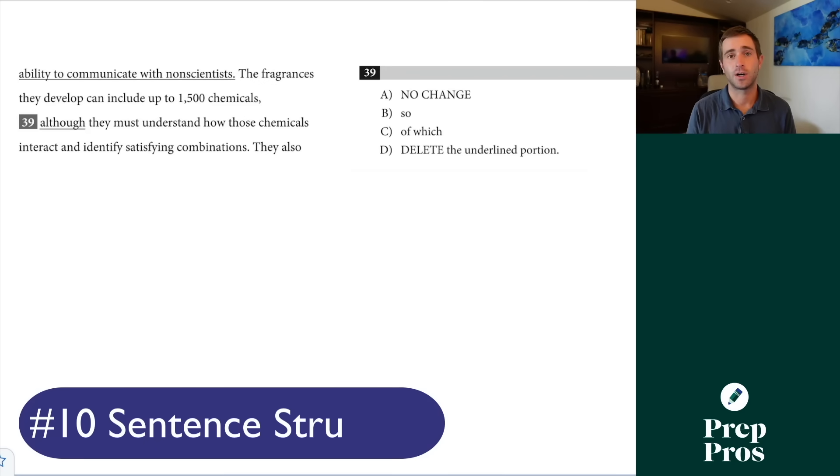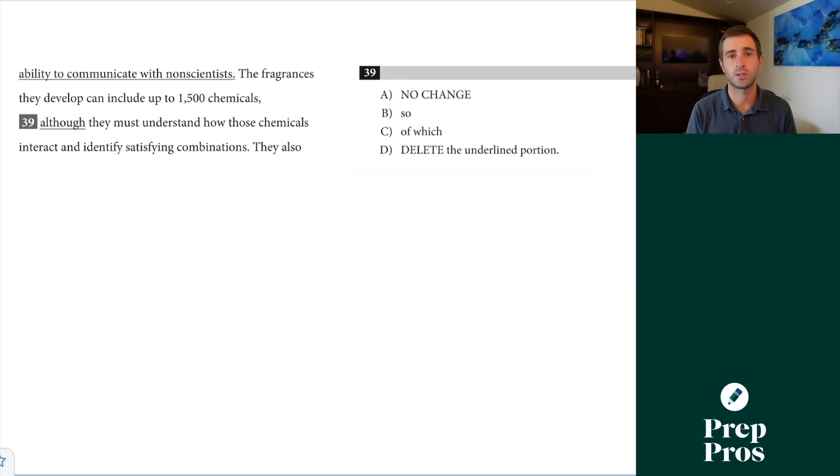The final thing you're definitely going to see are sentence structure questions. Sentence structure questions are all about how we can join independent and dependent clauses together. These are your most important basic rules to understand. Here, 'the fragrances they develop can include up to 1,500 chemicals' is an independent clause. 'They must understand how these chemicals interact and identify satisfying combinations' is also an independent clause. So I need to use a period, a semicolon, or a comma plus one of my fanboys to join those two together. That's why B is correct. A uses independent to dependent, we cannot use a comma there. We cannot use a comma before 'of which.' And if we delete it, we end up with a run-on sentence. I know those rules can feel overwhelming, so you can also learn these all in my free trial and get some great practice questions.